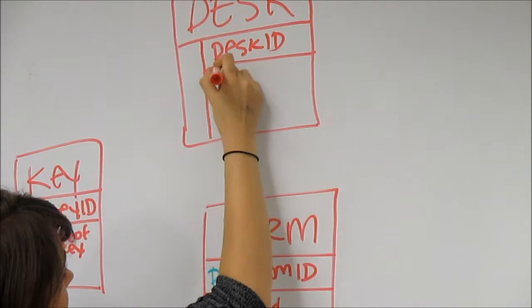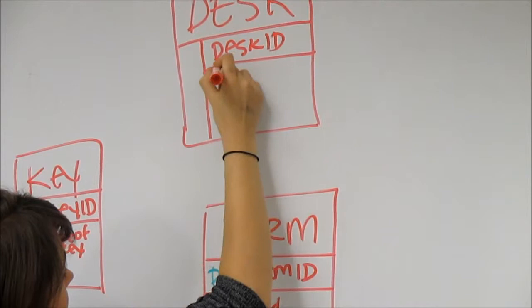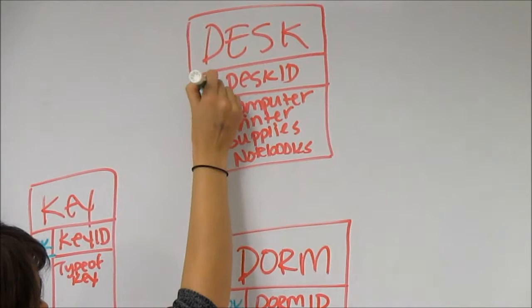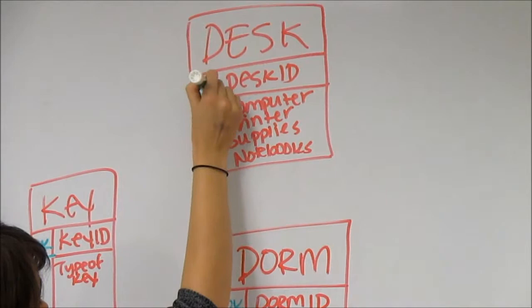In this case, we are using printer, computer, supplies, and notebooks. As we did before, remember to identify your primary key with a PK next to the primary key.